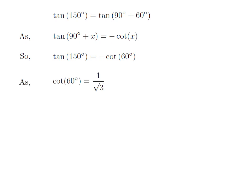We know the value of cotangent of 60 degree is equal to 1 upon square root of 3. So tangent of 150 degree is equal to minus 1 upon square root of 3.